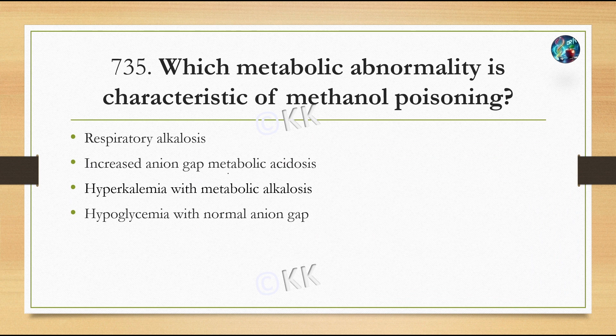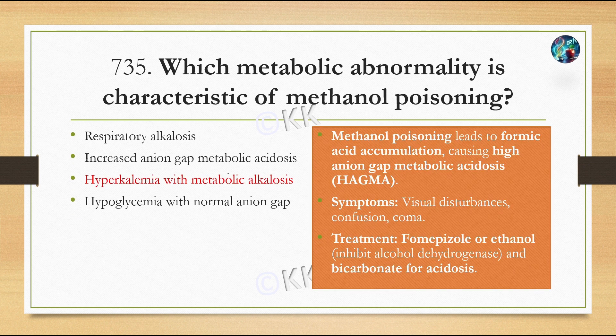Which metabolic abnormality is characteristic of methanol poisoning? Option A, respiratory alkalosis. Option B, increased anion gap metabolic acidosis. Option C, hyperkalemia with metabolic alkalosis. Option D, hypoglycemia with normal anion gap. The correct option is increased anion gap metabolic acidosis. Methanol poisoning leads to formic acid accumulation, causing a high anion gap metabolic acidosis.